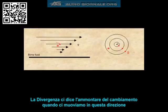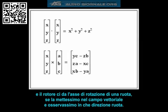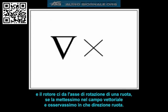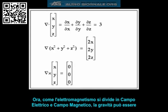The curl gives us the axis of rotation of a paddle wheel, if we were to place it in the vector field and see which direction it rotated. The curl is designated by the cross product — the delta operator followed by an X.